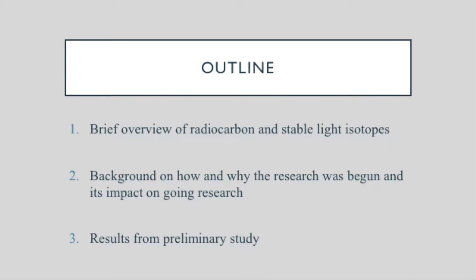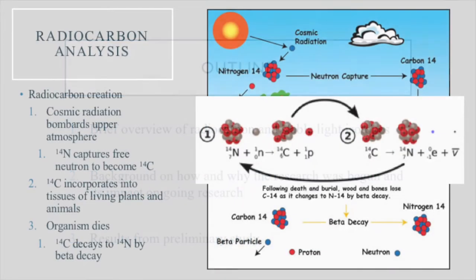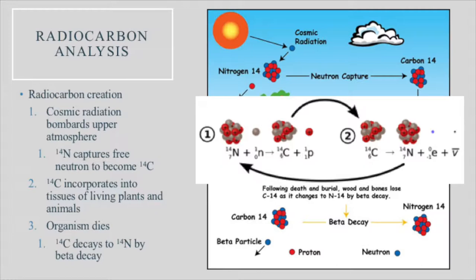If you have questions during the talk, please feel free to stop me and ask. So radiocarbon analysis starts with having radiocarbon produced. This begins in the upper atmosphere with cosmic radiation bombarding the upper atmosphere, creating neutrons. A nitrogen-14 atom captures one of these neutrons, pops a proton out of place, and because now that atom only has six protons, it becomes a carbon atom. But because it has six protons and eight neutrons, it is carbon-14.